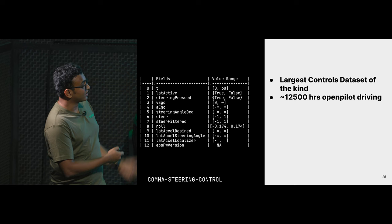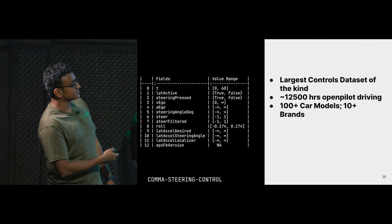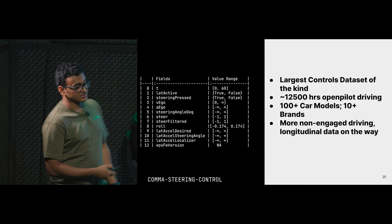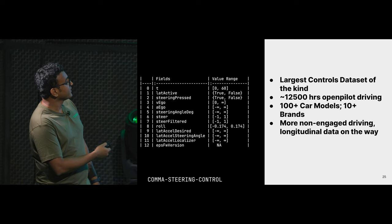With all this data, it's 12,500 hours of OpenPilot driving, 10-plus car models, and 10-plus brands. We have plans to add more data to this, including non-OpenPilot driving. The vehicle model is valid for small slip angles — small steering on a highway. But if you want to do a rapid 180-degree turn, the vehicle model completely breaks down. In OpenPilot, we're not there yet to do 180-degree turns, but we will be. At that time, we'll have to dive deeper into the data to figure out how we can improve our algorithms to cater to those maneuvers. This dataset has all of this information.